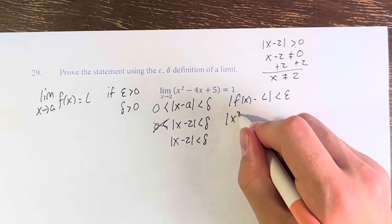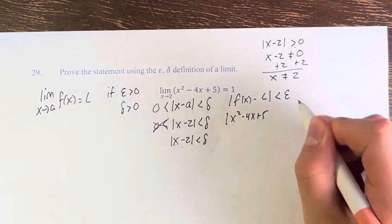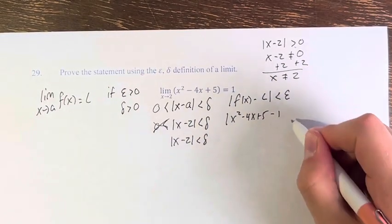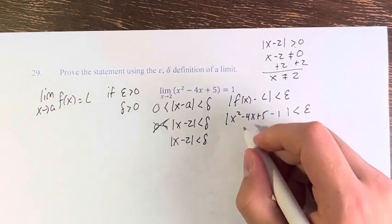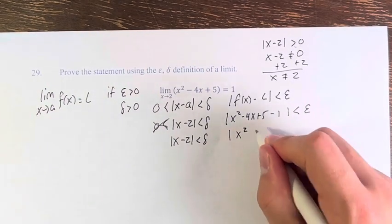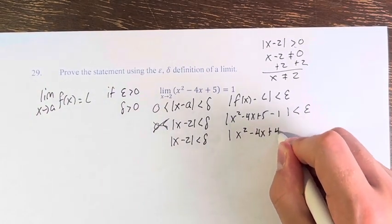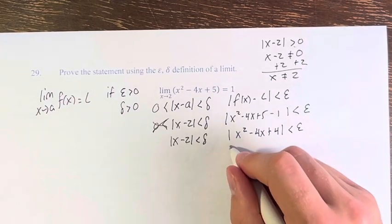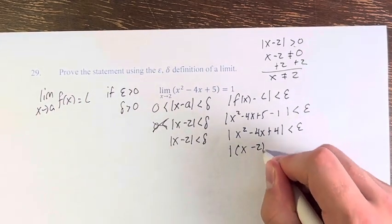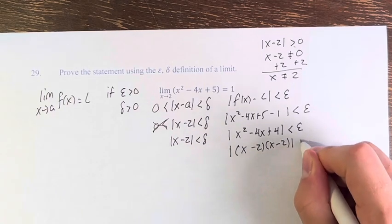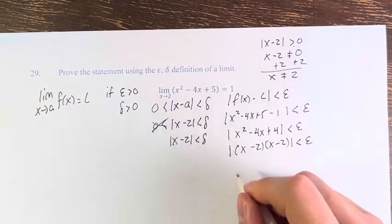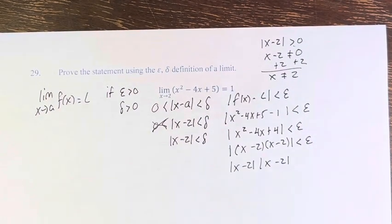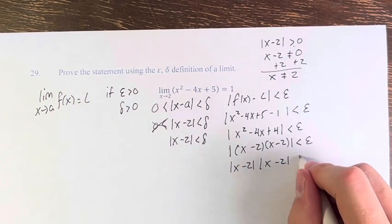f of x is x squared minus 4x plus 5, L is the value of the limit, so minus 1, and this is less than epsilon. Therefore, the absolute value of x squared minus 4x plus 4 is less than epsilon. And this is the absolute value of x minus 2 times x minus 2 is less than epsilon, which is the absolute value of x minus 2 times the absolute value of x minus 2. We can separate them within the absolute value.